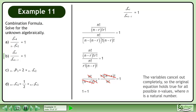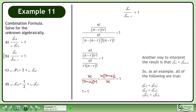The variables cancel out completely so the original equation holds true for all possible n values where n is a natural number. Another way to interpret the result is that n choose r equals n choose n minus r.